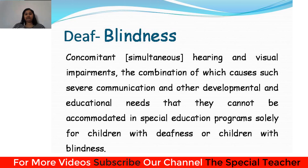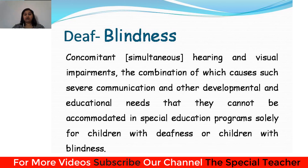Deafblindness is a rare condition in which an individual has both hearing and vision loss, resulting in the inability to access auditory as well as visual information. Deafblindness is a combination of auditory and visual impairment. There are many causes for deafblindness — it can be due to prematurity, birth complications, or any congenital syndromes, or a combination of these factors.